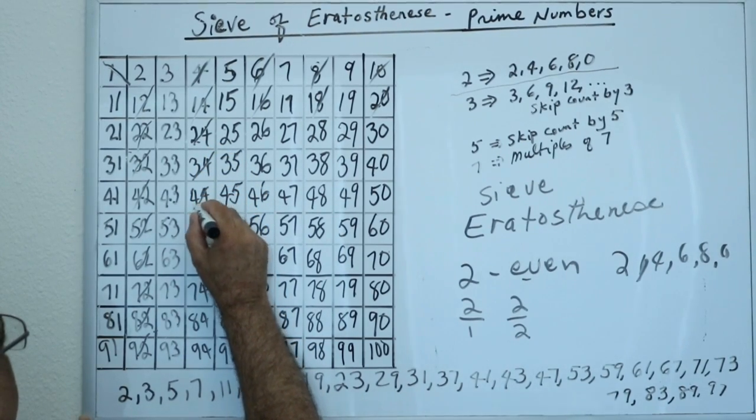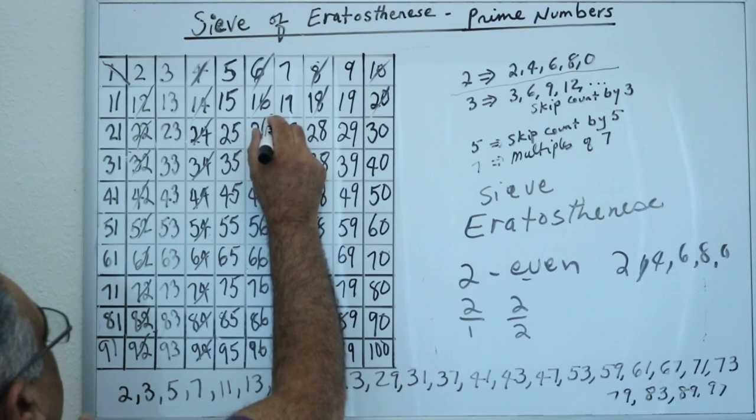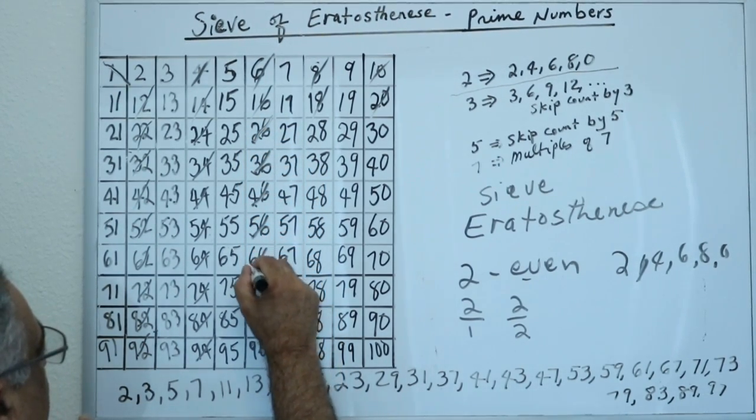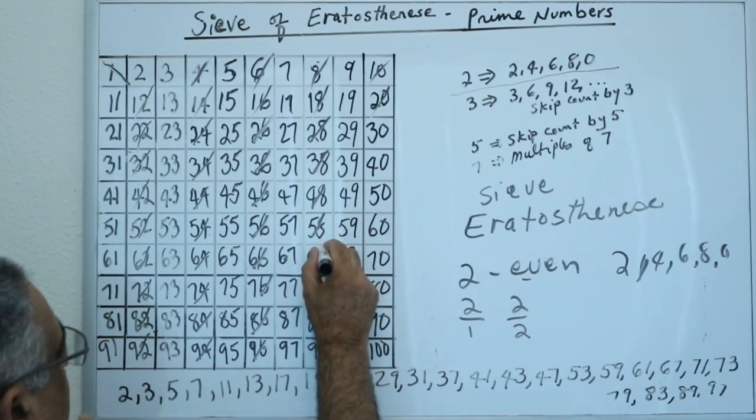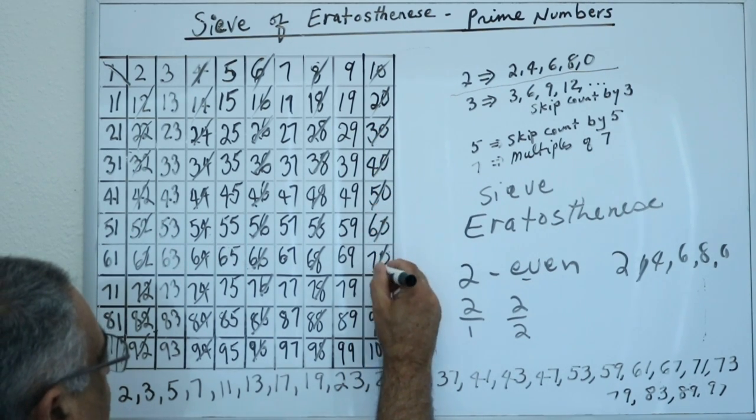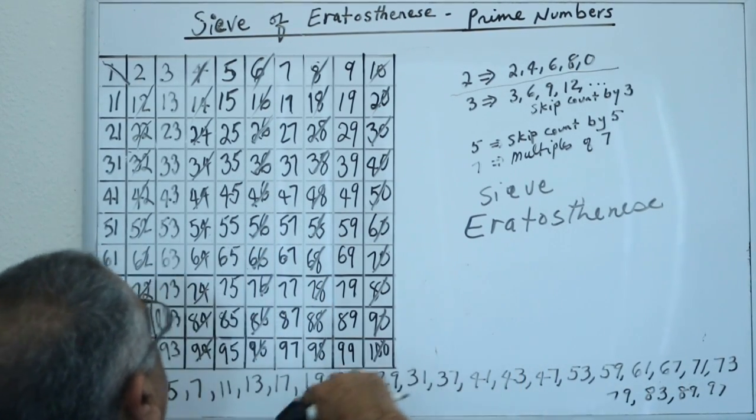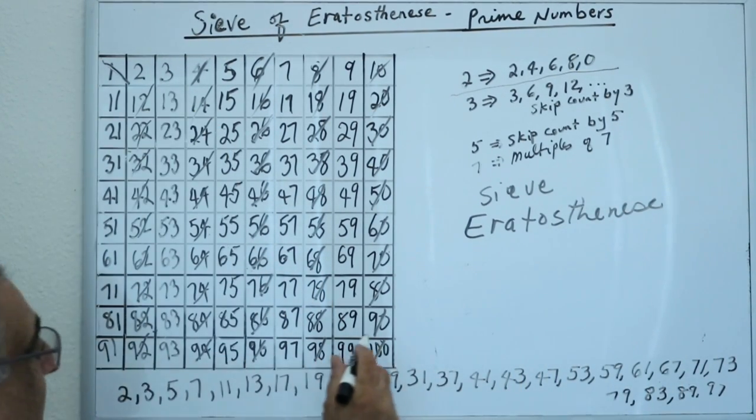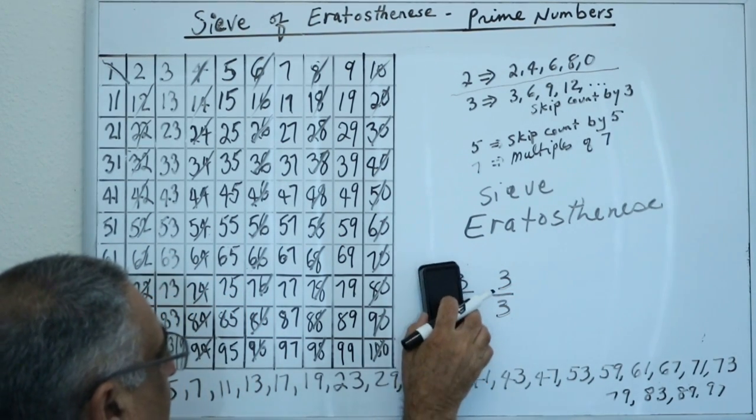These numbers end up in 4, 6, 8, and 0, so I eliminated all of these numbers. Basically, we have eliminated the numbers that are divisible by 2. So therefore they're not prime. So then the next part, I'm going to take 3. Well, 3 is a prime number because 3 is divisible by 1 and is divisible by itself. So therefore 3 is a prime number.